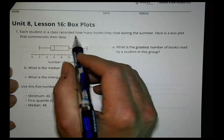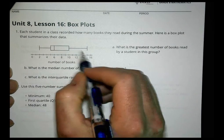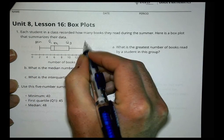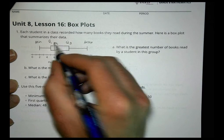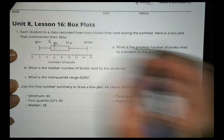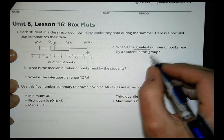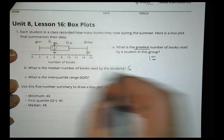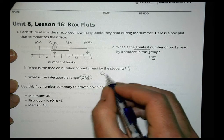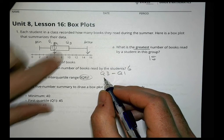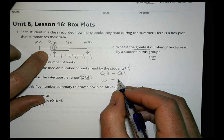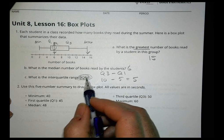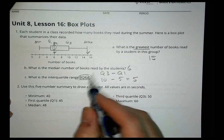Alright, homework time. Each student in class recorded how many books they read during the summer. Here's a box plot that summarizes the data. So we have a minimum here, we know we have quartile one, quartile two, quartile three, and a maximum there. What is the greatest number of books? The greatest number of books is here at the maximum, that's going to be right there at 15. The median is based upon this line right there, which is at point number six. And the interquartile range, recall that, that is Q3 minus Q1. So quartile three is here at ten, quartile one is here at five. So ten minus five is five.